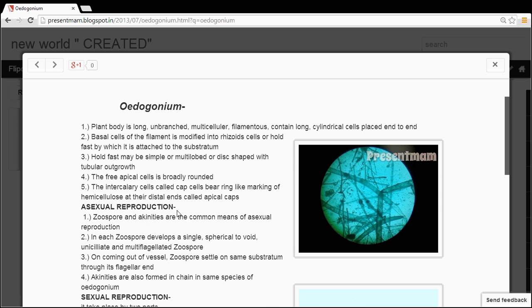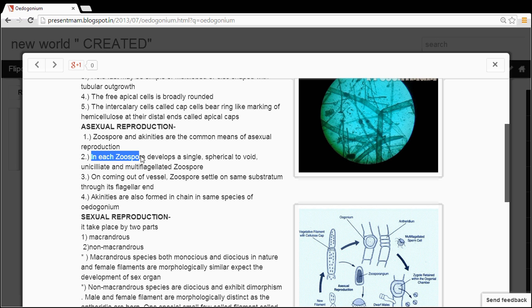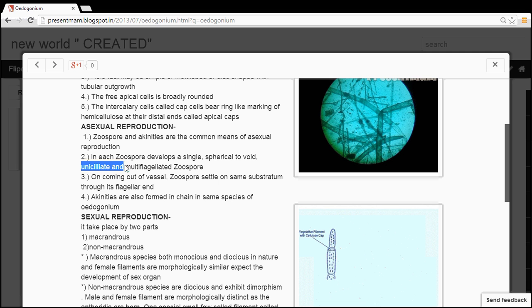About their reproduction, first asexual reproduction: zoospores and akinetes are common means of asexual reproduction. A zoospore develops a single spherical void, uniciliate and multiflagellate zoospores. On coming out of vessels, zoospore settles on same substratum through its flagellar end.